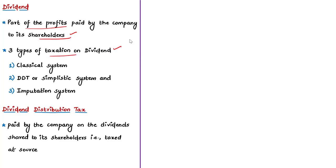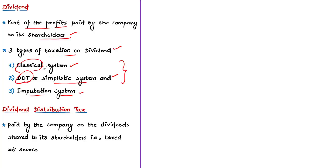There are three methods of taxing dividend prevalent globally. One is the classical system, the second is the DDT — that is the Dividend Distribution Tax method, also called the simplistic system — and the third is the imputation system. Our analysis will focus more on the DDT system and the classical system, as they are more relevant from the Indian scenario.